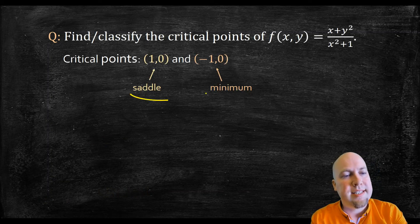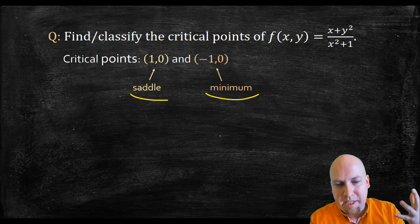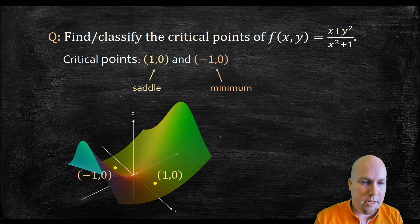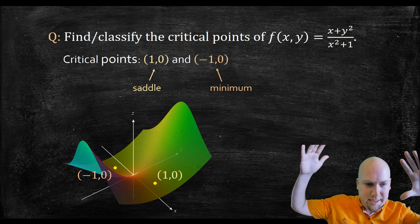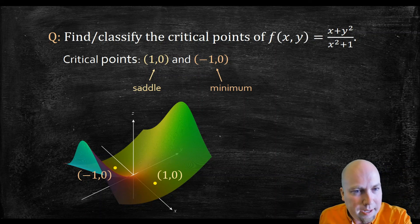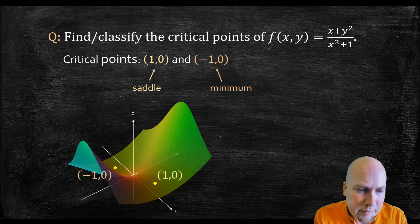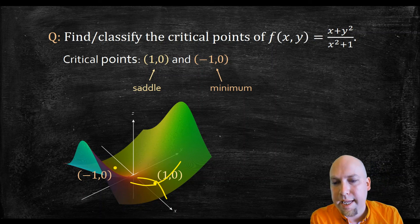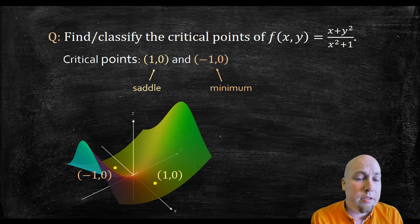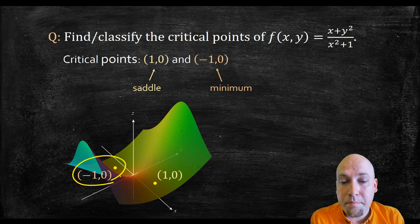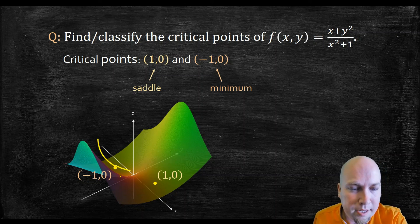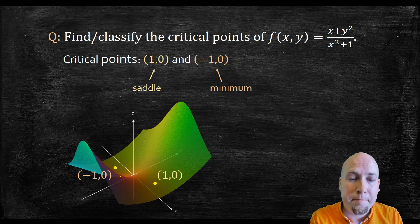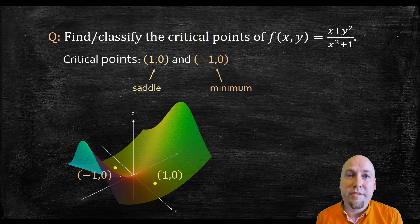So the first critical point (1, 0) is a saddle and the second critical point (−1, 0) is a minimum. Looking at the graph of the function: the saddle at (1, 0) is going up in the y direction and concave down in the x direction. The minimum at (−1, 0) — you can see the function going up as you move away from it in every direction, concave up all around, so it's the bottom of a valley. That'll do it for the second derivative test, and this is my last video on applied calculus — thanks so much for watching!